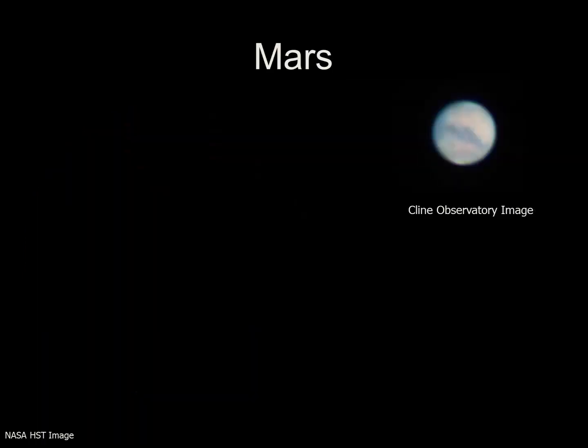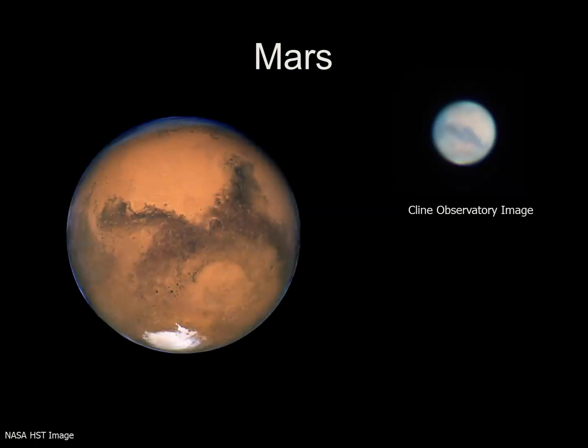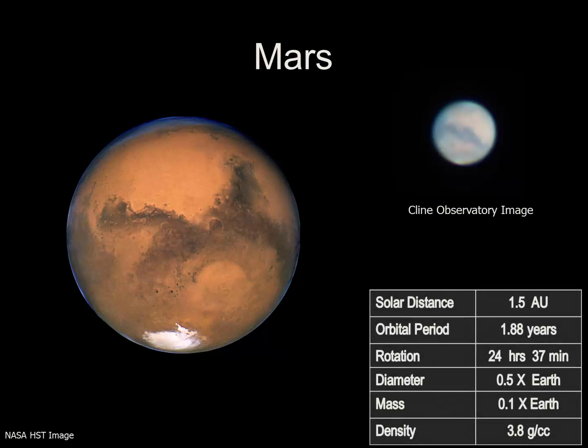On to the last of the terrestrial planets, Mars. Here's a view of Mars taken with telescopes at the Klein Observatory. Again, through the Hubble telescope, we can see far more detail. Right away, we may recognize the polar ice cap and the strong orange-red color. The orange-red color is due to the large quantities of iron oxide, or rust, in the soils.